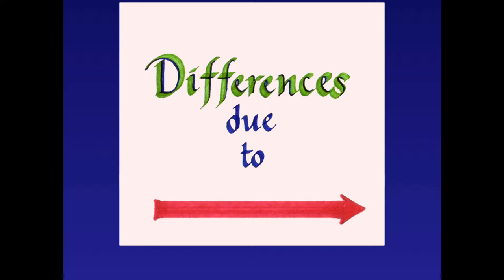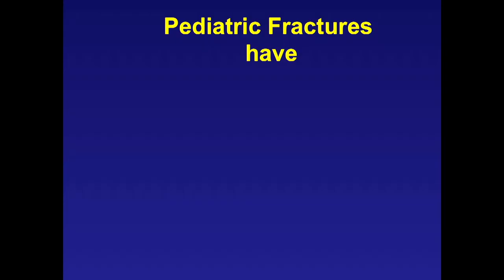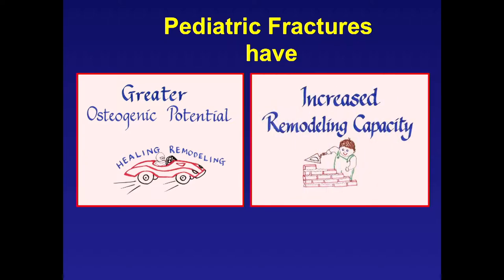The differences are due to growth. Because of that, the bone structure has different biomechanical characteristics. Pediatric fractures have greater osteogenic potential—they heal better and quicker—and we have increased remodeling capacity, which we'll see later. This really helps in treatment as long as you understand the basic principles.